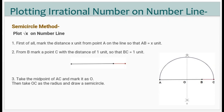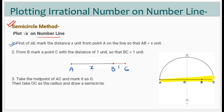Now let us learn about the semicircle method. Suppose you have to draw root x on a number line. First, mark the distance x units from A on the line, so that AB equals x units. For example, suppose you have to draw root 6.5 — you will draw a line segment of 6.5 units.